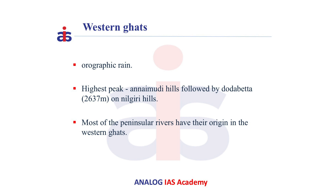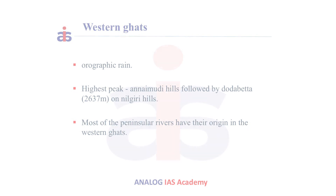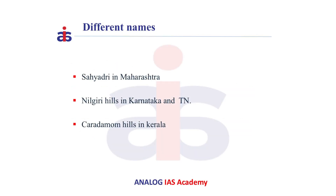Most of the peninsular rivers have their origin in the Western Ghats, like Krishna, Godavari and Kaveri. The Western Ghats are locally known by different names like Sahyadri in Maharashtra, Nilgiri Hills in Karnataka and Tamil Nadu, and Cardamom Hills in Kerala.